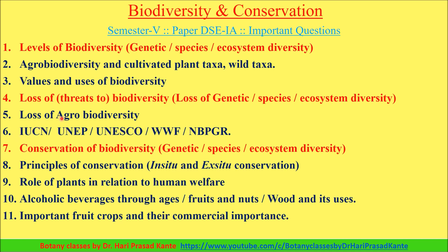The next topic is biodiversity management institutions. We also have the abbreviation forms: IUCN, UNEP, UNESCO, WWF, NBP, and GR. In this abbreviation form, we cover their locations, objective functions, and entities.